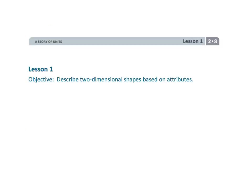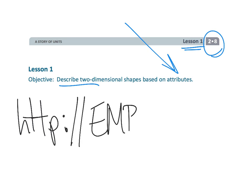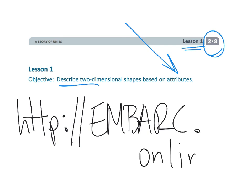And that wraps up second grade, module eight, lesson one. We're describing two-dimensional shapes, but we're really focusing on attributes like sides and angles. If you'd like to see more videos, please go to Embark Online and you'll get tons of videos.